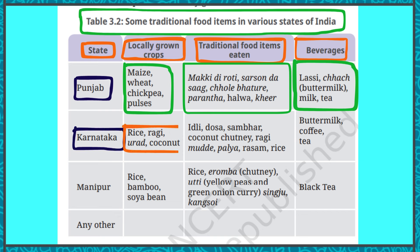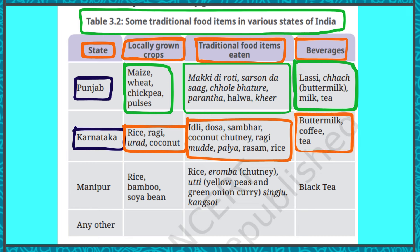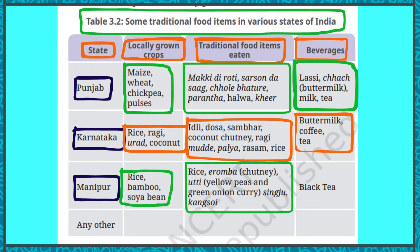For Manipur: locally grown crops are rice, bamboo, and soya bean. Traditional food items include rice, aromba (chutney), uti (yellow peas and green onion curry), singju, and kangshoi. The beverage is black tea. For Bihar: locally grown crops are rice and pulses. A traditional food item is litti chokha, and beverages include buttermilk and chaach.